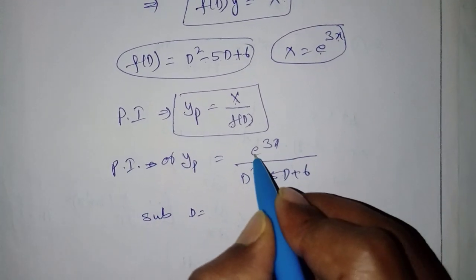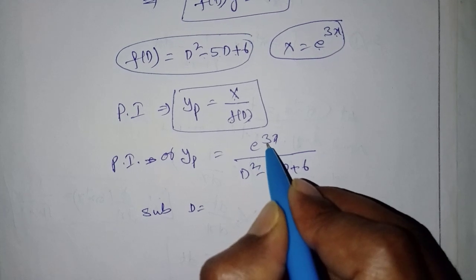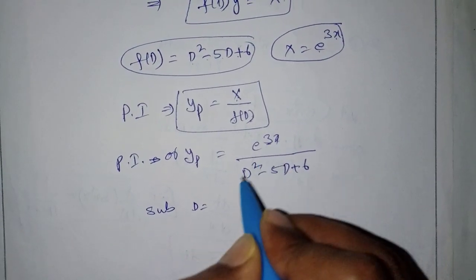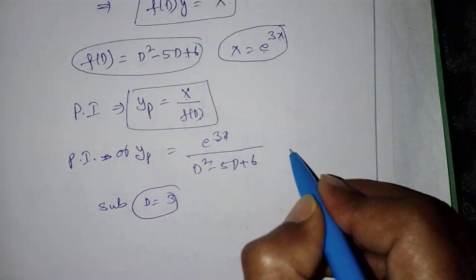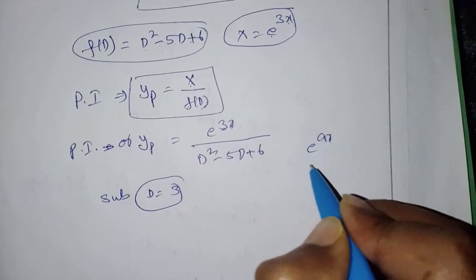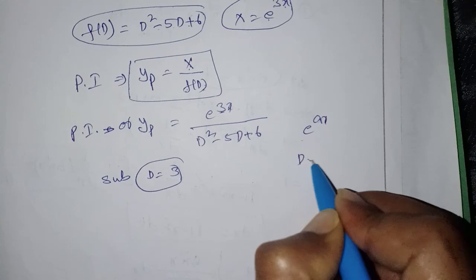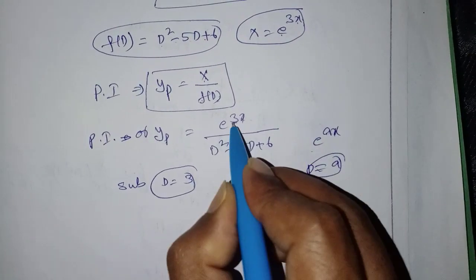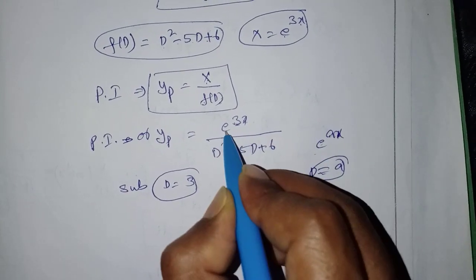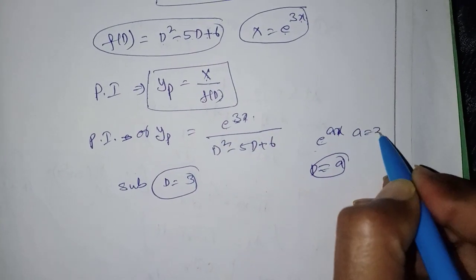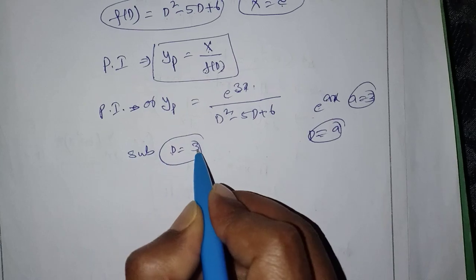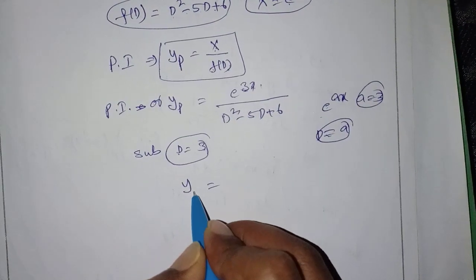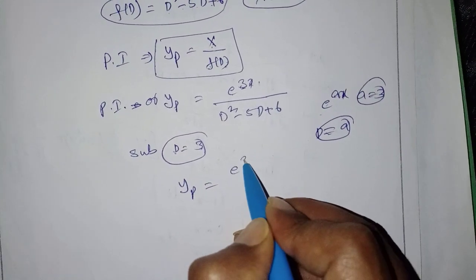Now substitute D equal to the exponent value of e^(ax). The formula for e^(ax) requires substituting D = a, where a is the coefficient of x in the exponent. Here the function is e^(3x), so a = 3. Therefore substitute D = 3 in the denominator.